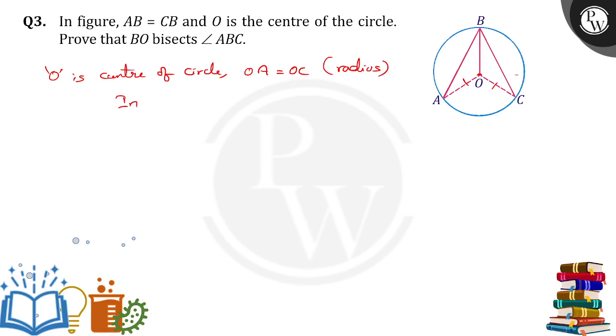Now I am going to take two triangles: triangle AOB and triangle COB. In both of them AB is equal to CB.